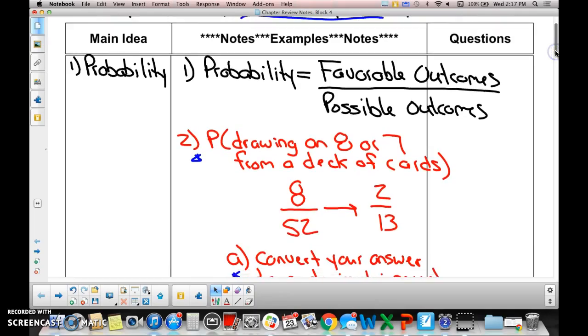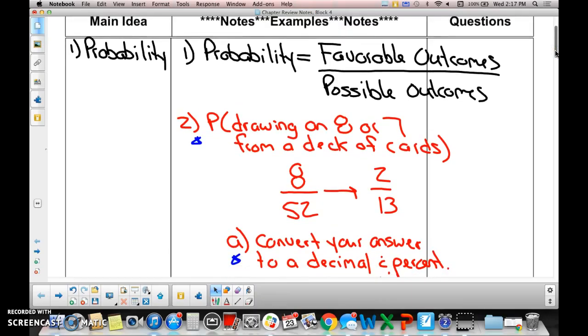Formulas are kind of big here. Probability - you've got to know it. Probability is favorable outcomes over possible outcomes. There's another formula with favorable over possible outcomes. This is theoretical probability. You're going to see it a little bit later in the notes, but just know that they're the same thing.